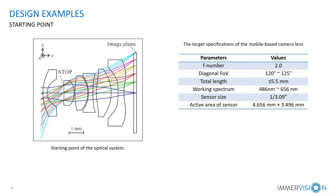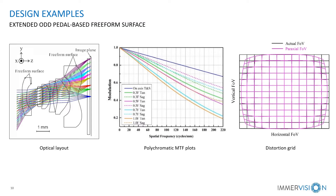In the first example, we designed a compact camera lens using extended-order free-form surfaces. As shown in this layout, the lens uses 8 even aspheric surfaces and 4 extended-order free-form surfaces. The FOV of the optical system is about 121 degrees, the F-number is about 2.06, and the TTL is about 5.4 mm, showing a compact structure.